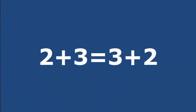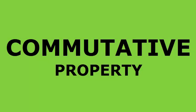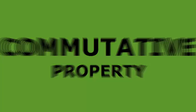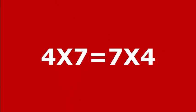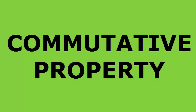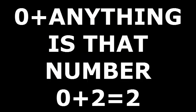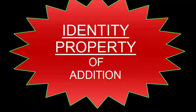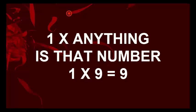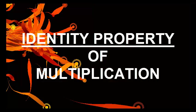2 plus 3 equals 3 plus 2 — commutative property. 4 times 7 equals 7 times 4 — commutative property. 0 plus anything is that number — identity property.